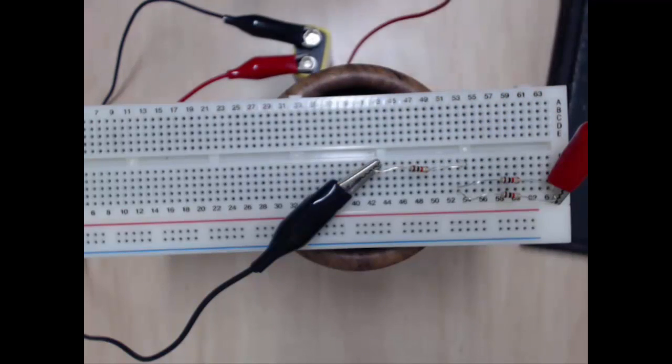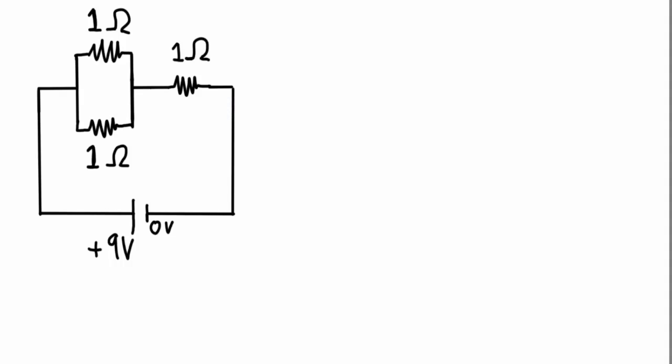So let's draw a circuit diagram of what this looks like. So here is my circuit diagram, and what I'd like to figure out is what is the total effective resistance of all three resistors, and also how much current would flow through this circuit.